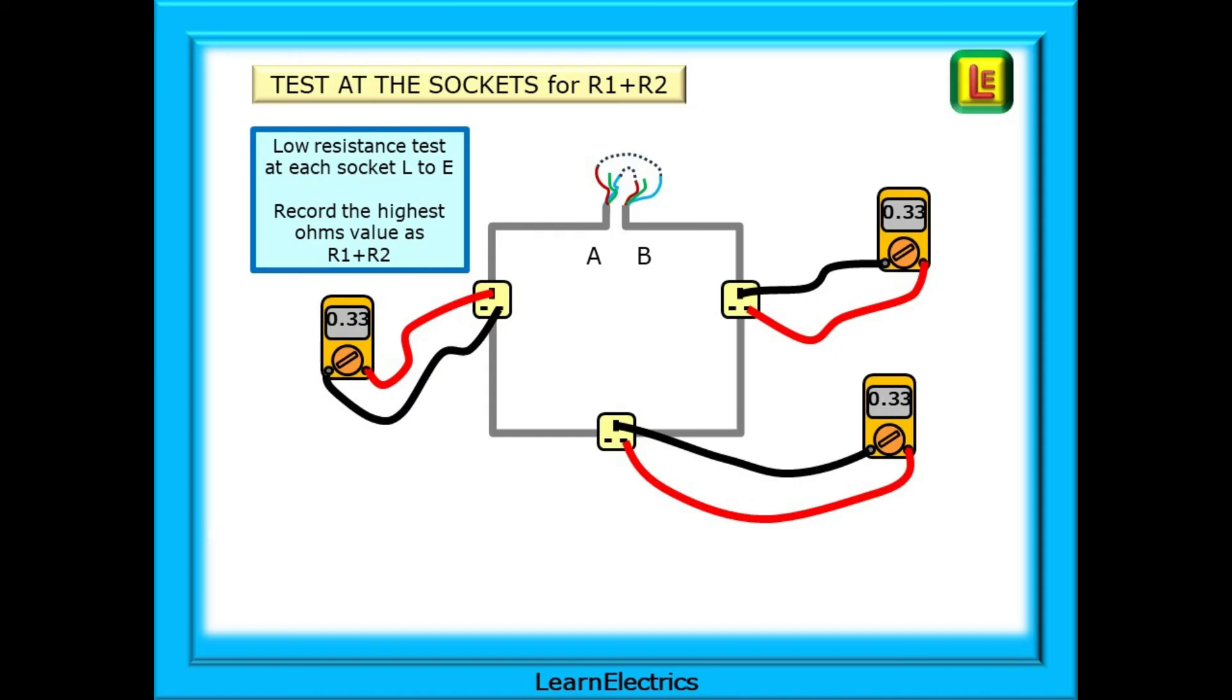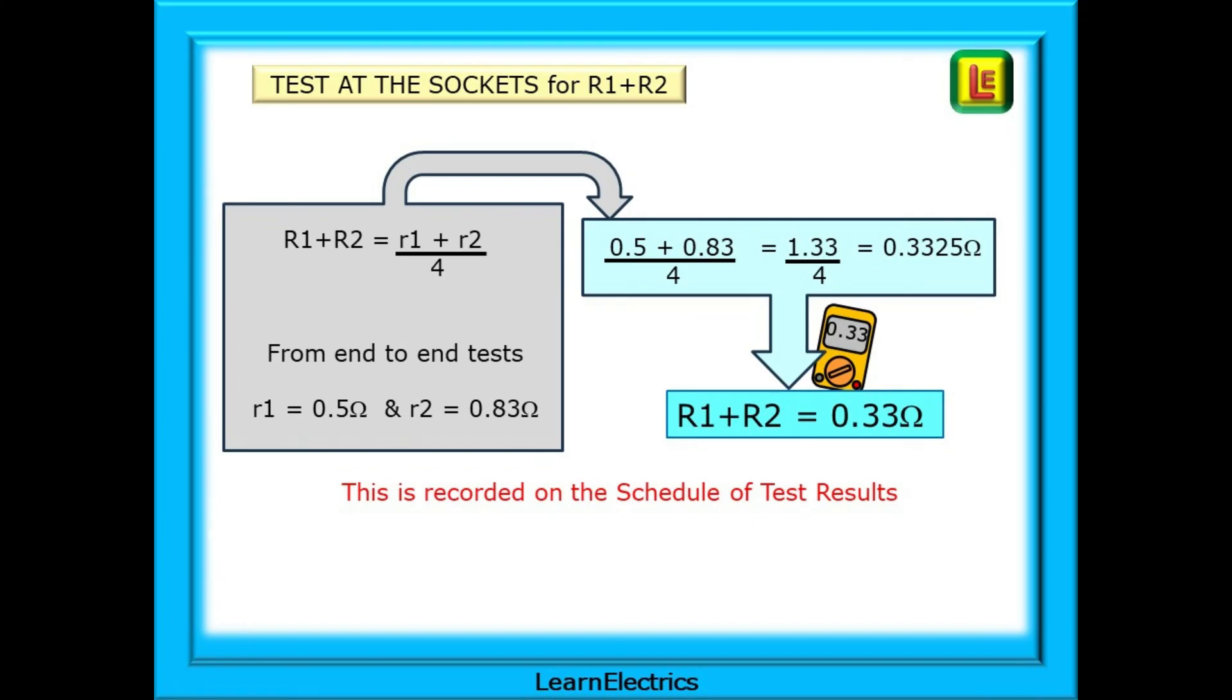By making the calculation, as shown here, we can confirm that 0.33 ohms is the test result to be expected. We already know little R1 and little R2 from the end-to-end tests, so we add these together and divide by 4. The answer, when rounded down, is big R1 plus big R2 is 0.33 ohms. If your test results are close to the calculated figures, then we know that this part of the circuit is correct.